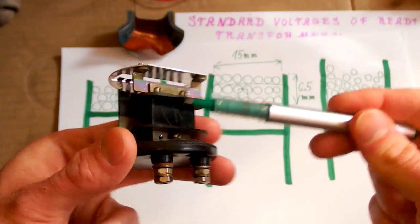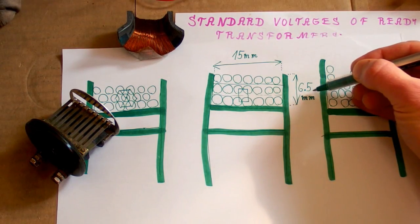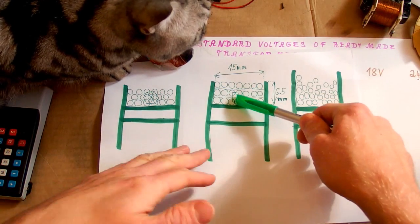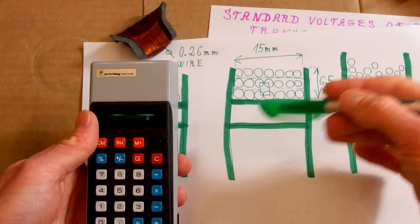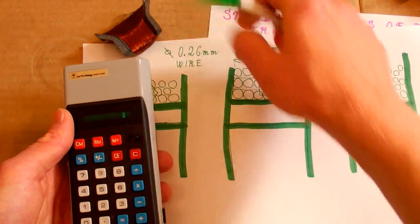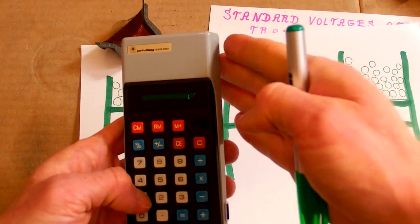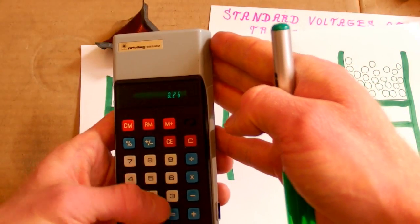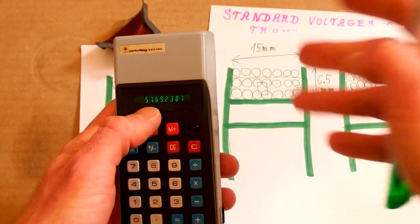The space on the spool is about 15 millimeters wide and about 6.5 millimeters tall. So if I can put the wire on in the middle of those extremes, how many turns can I fit? I have 0.26 millimeter wire including isolation. It's 15 millimeters wide, so each layer can take 15 divided by 0.26 millimeters, which is about 57 turns per layer.